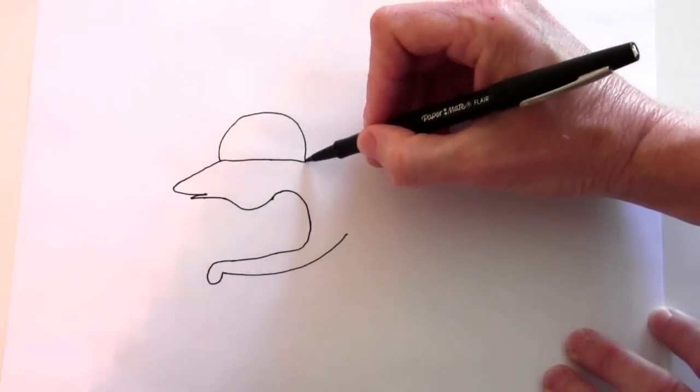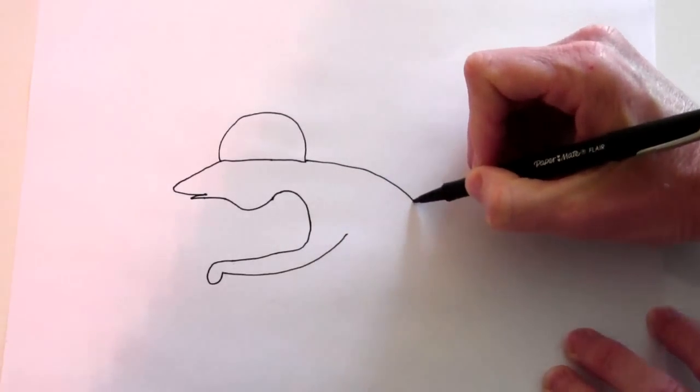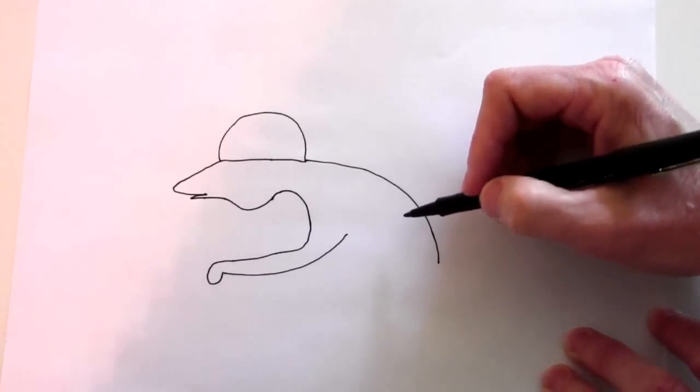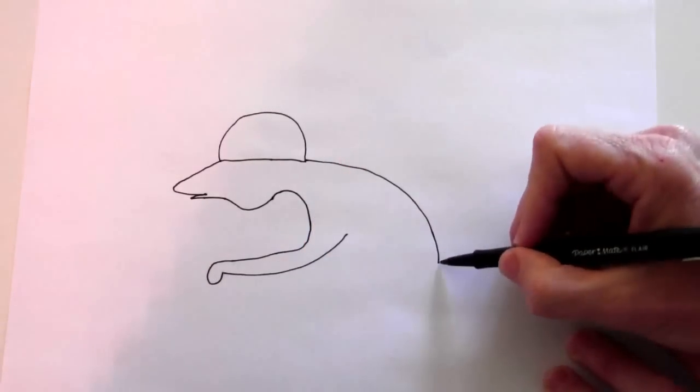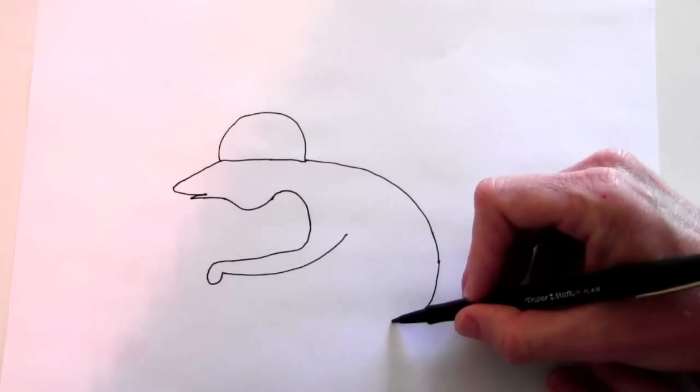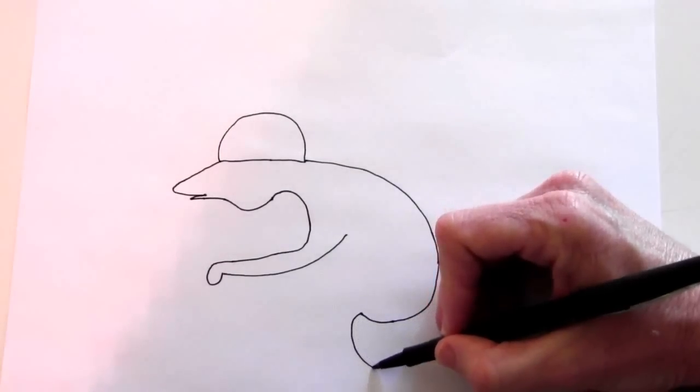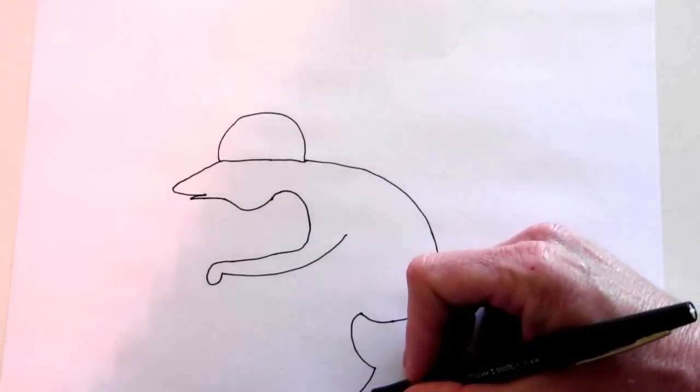Now we're going to do the back. The back goes out and this comes down below the paw, so come down here lower and then go around like that. Curved line that goes this way. This is his leg and then it goes like this.